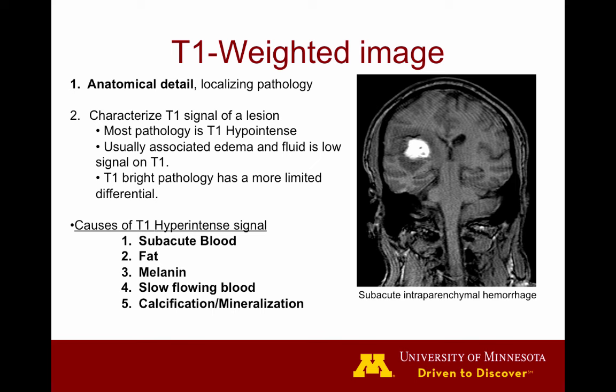However, there are a few things to take note of where disease processes cause increased signal on T1-weighted images, especially certain phases of blood products — especially the subacute phase. Fat-containing tumors such as lipomas, liposarcomas, dermoid tumors, and melanocytic tumors. Slowly flowing blood in blood vessels can lead to high signal, and even occluded blood vessels can show up as high signal on a T1-weighted image, and then certain forms of calcification and mineralization.